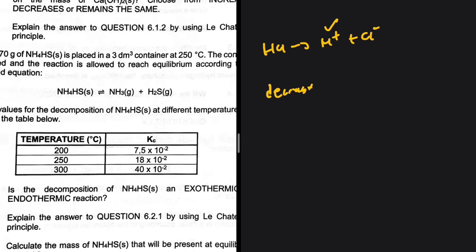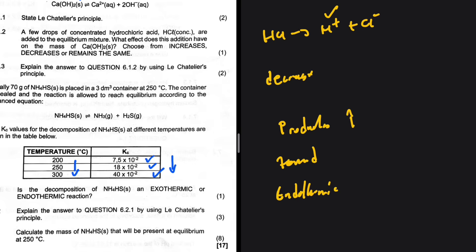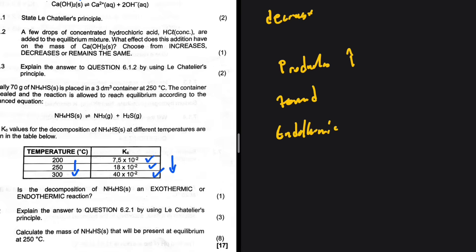Let's take a look at the table. As the temperature increases, the Kc increases. Kc increasing implies that the amount of products is increasing. If the amount of products is increasing, then the forward reaction is favored. An increase in temperature is causing an increase in the Kc, so that tells us that the decomposition of NH4HS is an endothermic reaction, because an increase in temperature favors an endothermic reaction. When the temperature is increased, the forward reaction is favored, leading to an increase in the Kc.